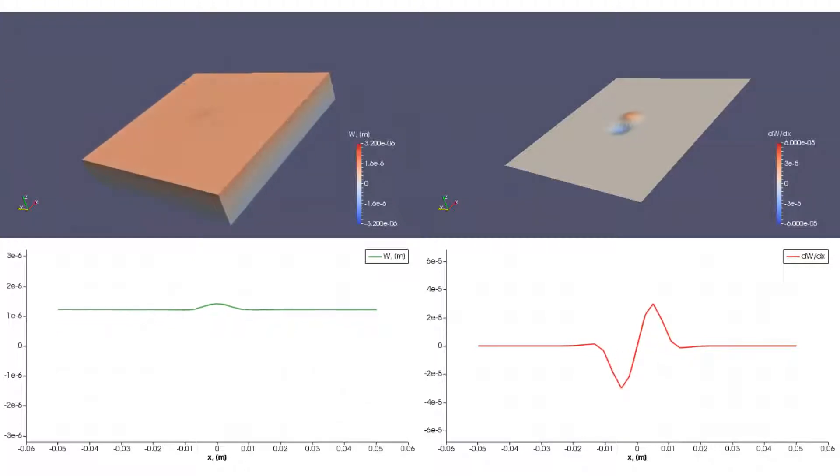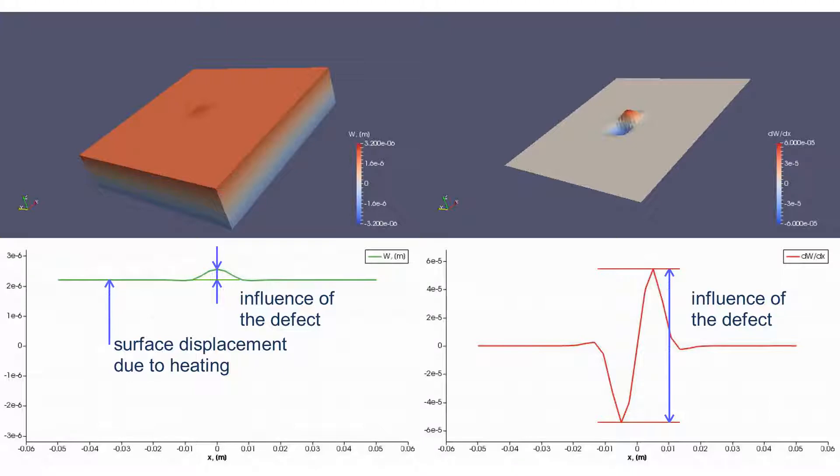The deformation anomaly caused by the defect is visible by speckle interferometry technique and shearography. But noise-to-signal ratio for the shearography is much better.